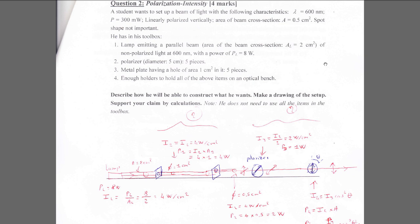This next problem is one I invented — not from any textbook — intended to make you think, since standard textbook problems all follow the same pattern. A student wants to set up a beam of light with specific characteristics: wavelength 600 nm, power 0.3 watt, linearly polarized vertically, beam cross-section area 0.5 cm², and spot shape is not important.